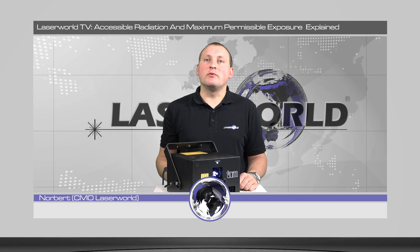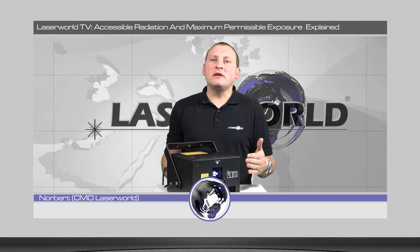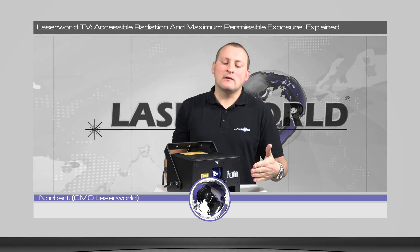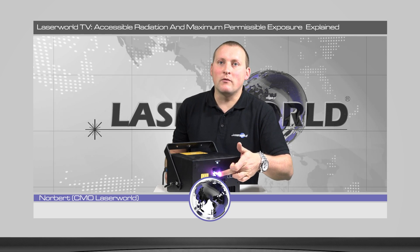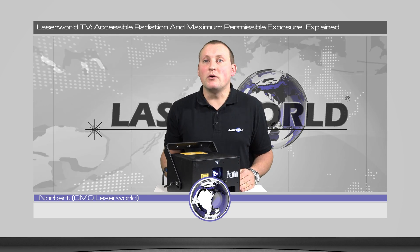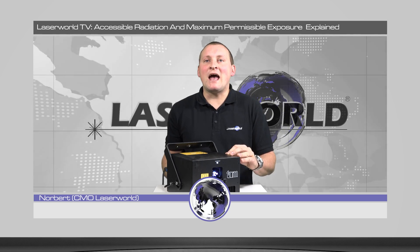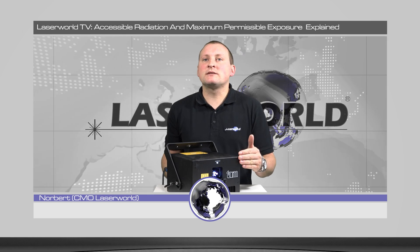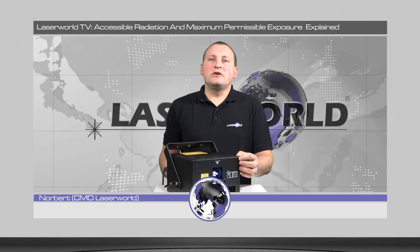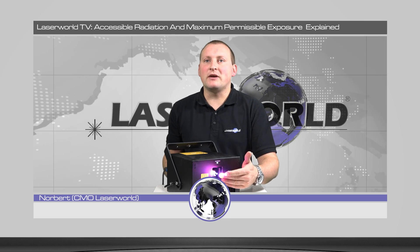What is the difference between accessible radiation and maximum permissible exposure? Accessible radiation is the point where the laser can be accessed — the least point where it can be accessed — which is exactly here at the front window of the laser. The maximum permissible exposure is the maximum intensity the laser may have in the area where audience, people, or animals can be hit by the laser. Accessible radiation is usually full power, or at least full power here at that point.